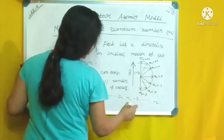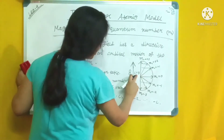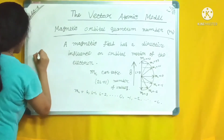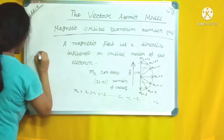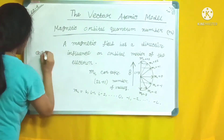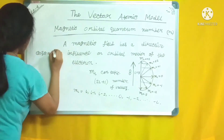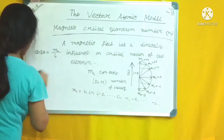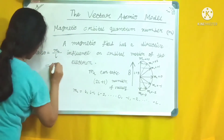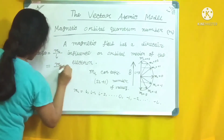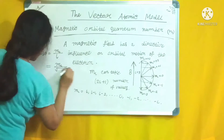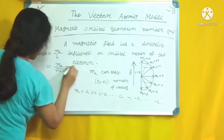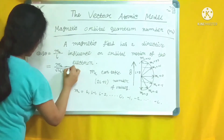For l=3, as seen from the diagram, ml can take values +3, +2, +1, 0, −1, −2, and −3. The angle is given by cos θ = ml / l = ml / √(l(l+1)).